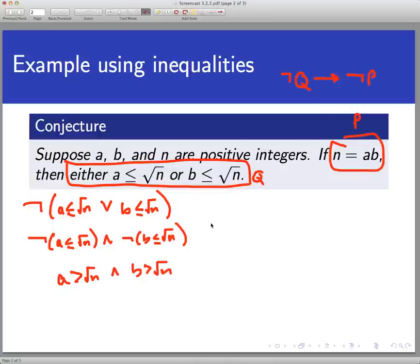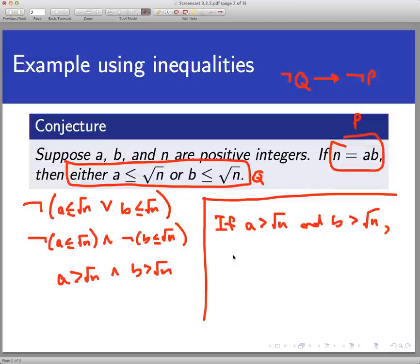Let's do this kind of over in this white space here. So the contrapositive of the statement that I am being asked to prove says that a, b, and n are positive integers. That if a is bigger than square root of n and b is bigger than square root of n, then I have to put the negation of p, and that's simply n is not equal to ab.